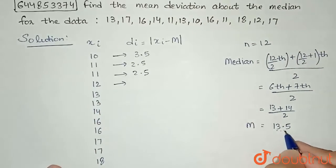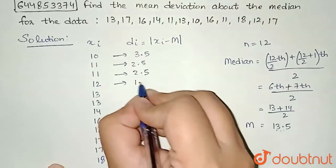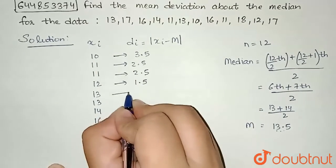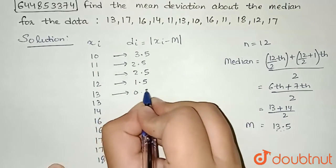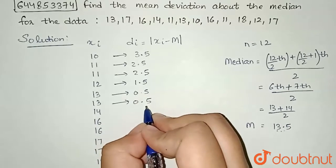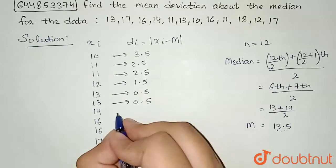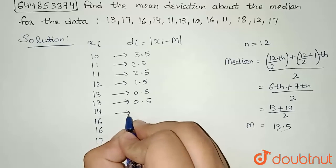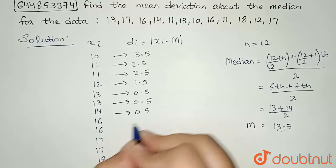For 12, it will be 12 minus 13.5, so minus 1.5, plus mod is there, so 1.5. For 13, I will have 0.5. And again for 13, I will have 0.5 only.